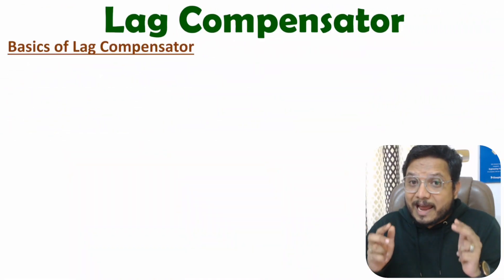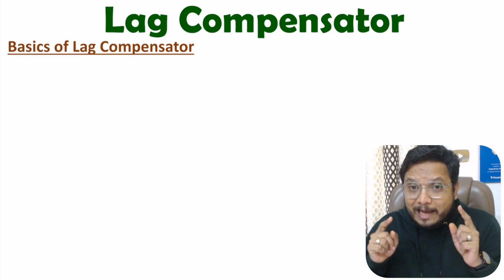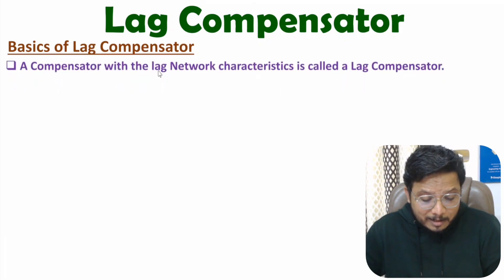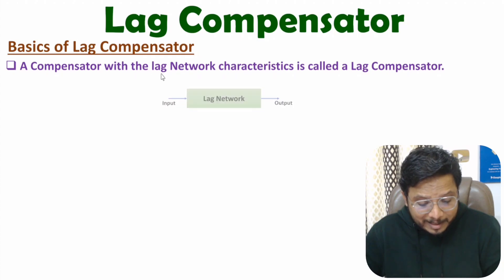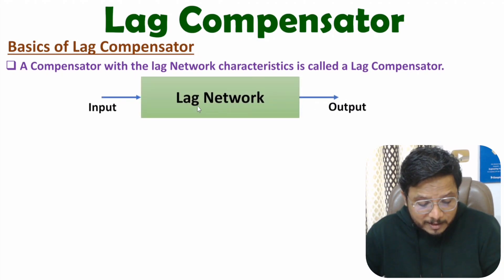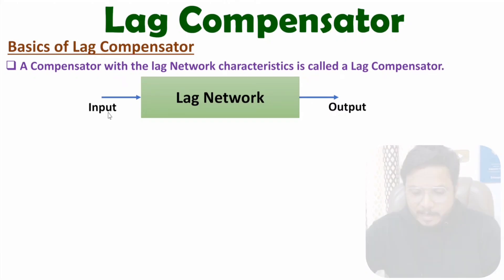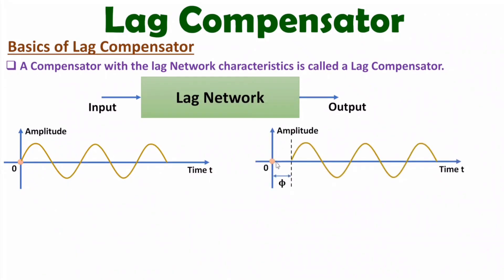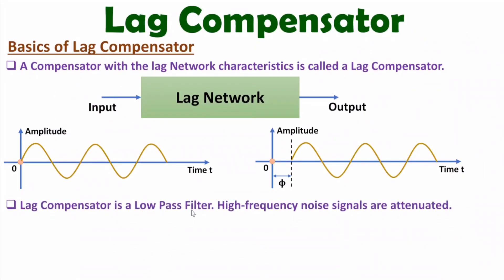Lag compensator adds negative phase with the system. So with lag compensator, output phase lags with respect to input — it adds lag network characteristics. Here we have an input signal that is sinusoidal, and at the output side we have lag in phase. Always remember, this lag compensator acts like a low pass filter, so it will be attenuating high frequency noise signals.